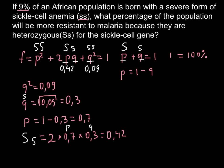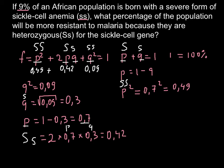We can also verify our answer by solving for the homozygous dominant genotype — that is, p². We know p = 0.7, so p² = 0.7 × 0.7 = 0.49. Adding all three frequencies: 0.49 + 0.42 + 0.09 = 1.00. This confirms that our answer for the heterozygous frequency is correct.